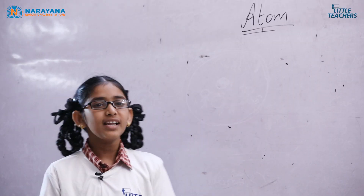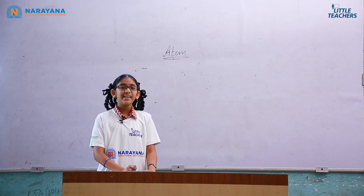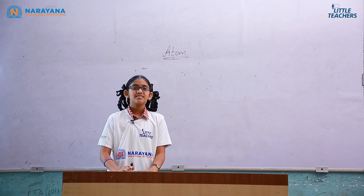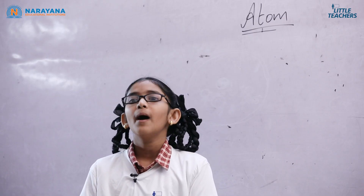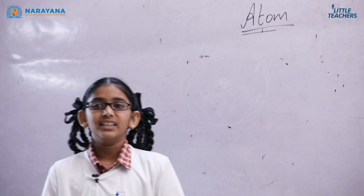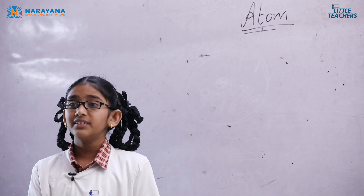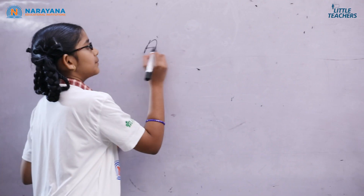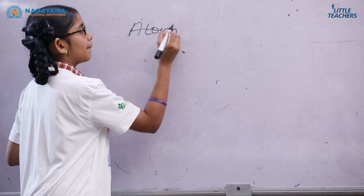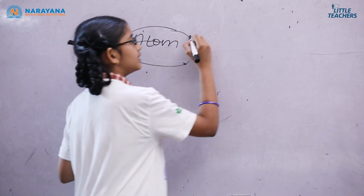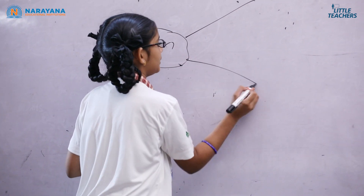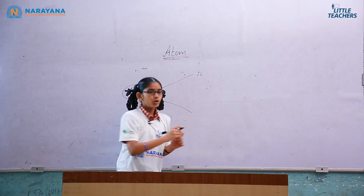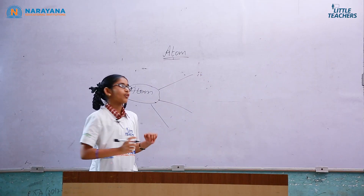An atom is the smallest particle of an element that takes part in a chemical reaction and is considered as the basic unit of matter. An atom consists of three subatomic particles: protons, electrons, and neutrons.